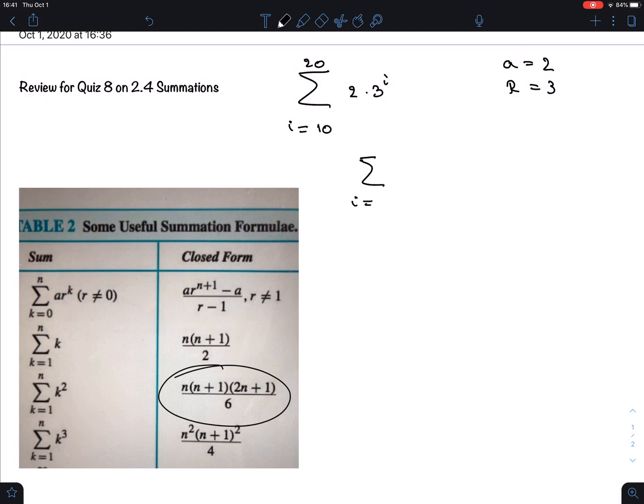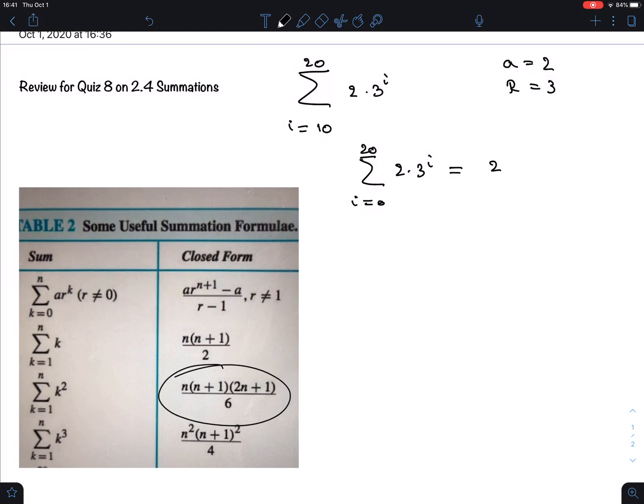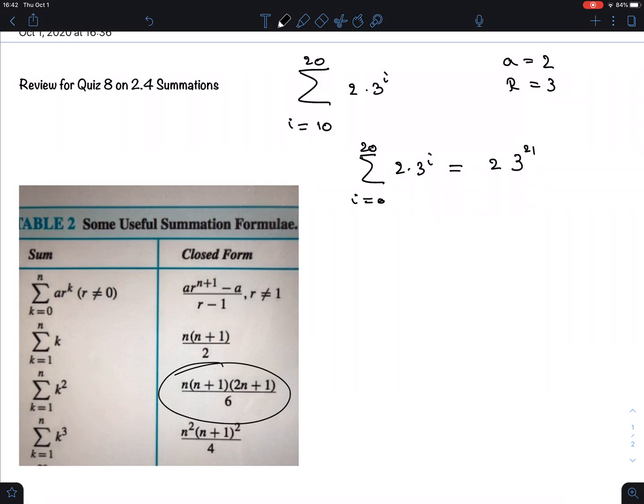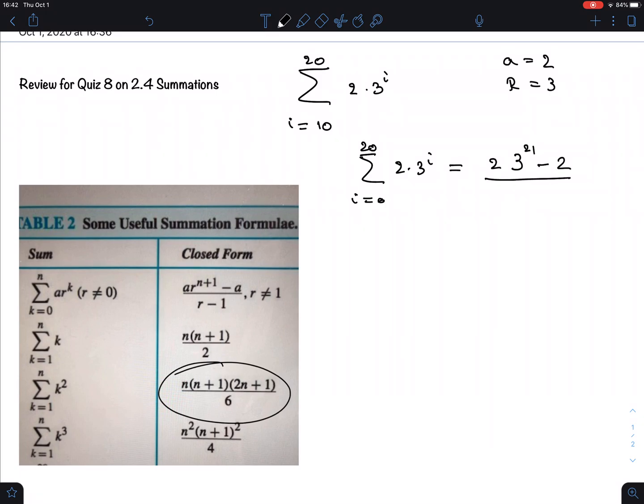We can apply the formula, and the table gives us this value. So what I would have there would be 2 times r, that is 3, to the power 1 higher than the index, so this n becomes n plus 1. So this 20 will become 21, minus 2 divided by 3 minus 1, that is 2.